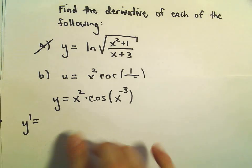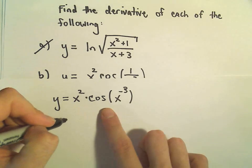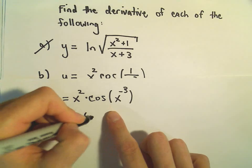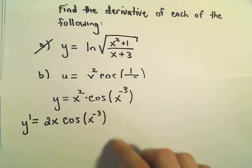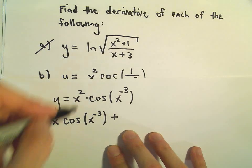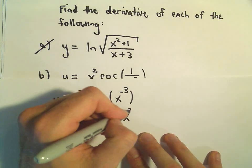So y prime - if I take the derivative of x squared, we just get 2x. We'll leave the cosine of x to the negative third alone. Plus, for the product rule, now we'll leave the x squared alone.